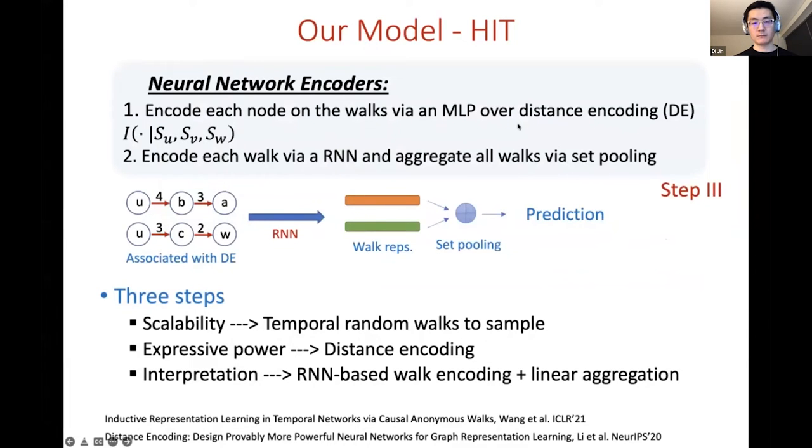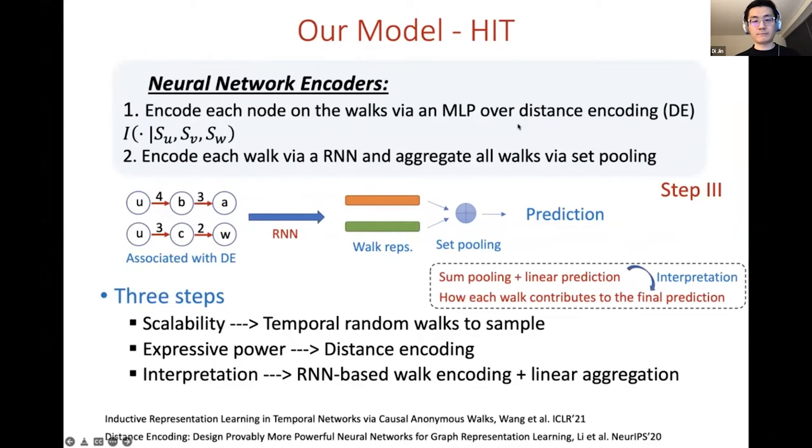Third, our model uses a recurrent neural network to encode each walk where the nodes on each walk will be attached with distance encoding. And the output of the recurrent neural network will be a representation for each walk. Then we use a set pooling for all of these walks to aggregate the representation to make the final prediction.